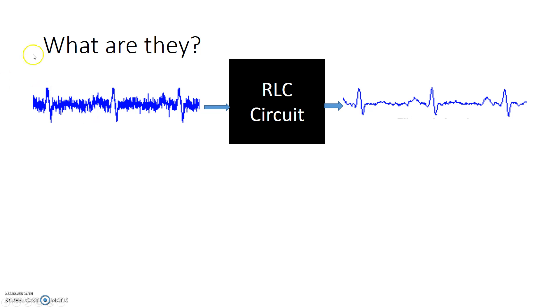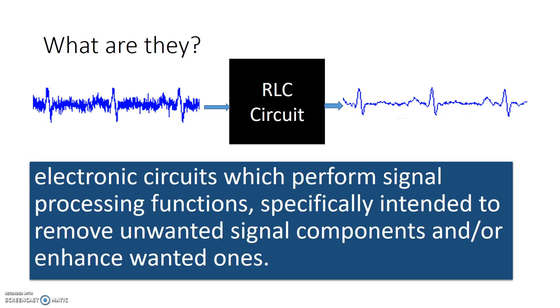So we put in a noisy signal into an RLC circuit, what came out was a clean looking signal. Essentially what a filter is, exactly as the English word means, it filters out certain unwanted components. In this case, the unwanted components might have been high frequency noise. So a filter is essentially an electronic circuit which performs some kind of signal processing function, and specifically it's intended to remove unwanted signal components or to enhance the components of the signal that we want to keep.